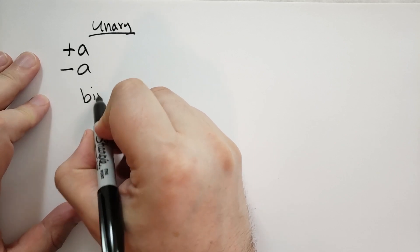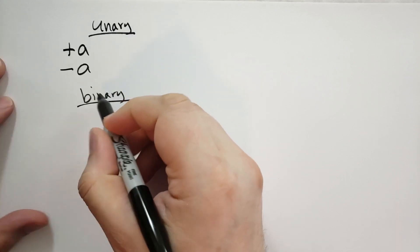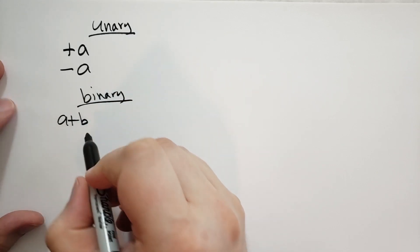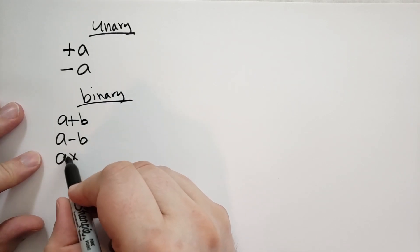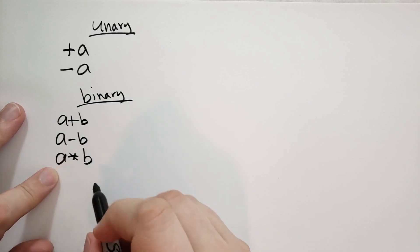Then you're going to have binary operators. You can add two integers together. You can subtract one from the other. You can multiply them. You're going to use the asterisk.